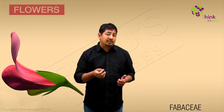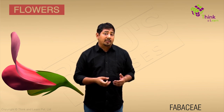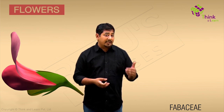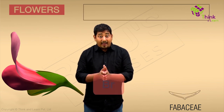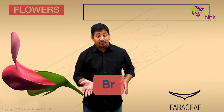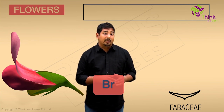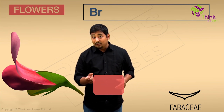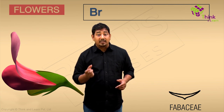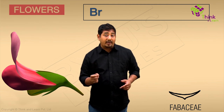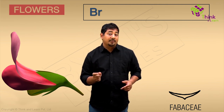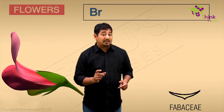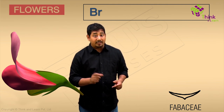The flowers in the Fabaceae family are typically stalked, that is they are also pedicellate. Now they have bracts, so you will put the symbol BR here in the floral formula. In fact, the bracts also have bracteoles, that is smaller bracts attached to them. This in fact makes them bracteolate.